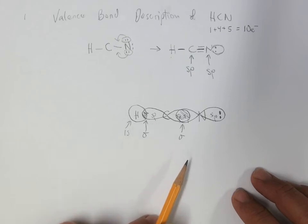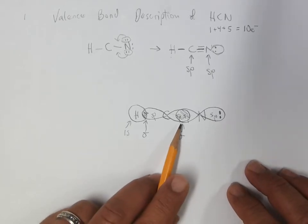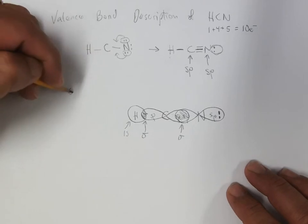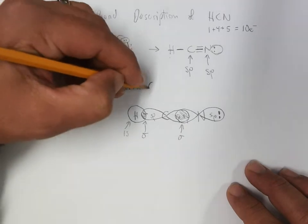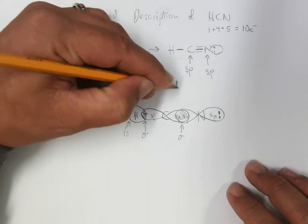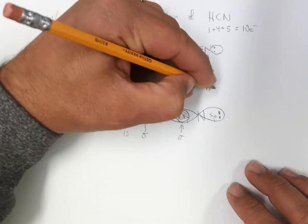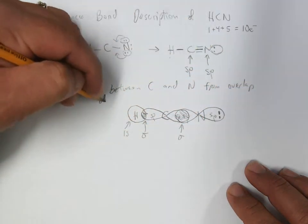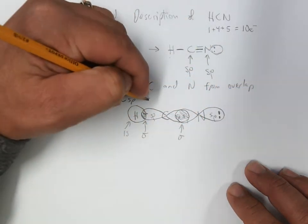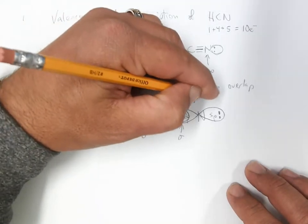The picture is representing things pretty well. So we have a sigma bond between carbon and nitrogen from the overlap of carbon sp and nitrogen sp orbitals.